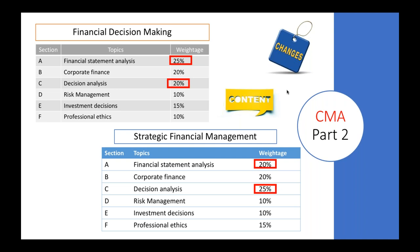Risk Management weightage remains the same at 10%. For Investment Decisions, the weightage is reduced from 15% to 10%, so payback period, IRR, NPV, ARR, and profitability index will now give you 10% weightage instead of 15%. Professional Ethics has gained importance — it's been increased by 5%, from 10% to 15%.